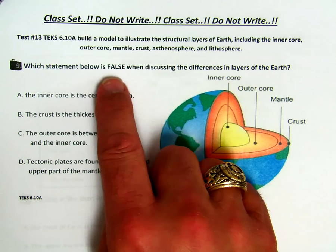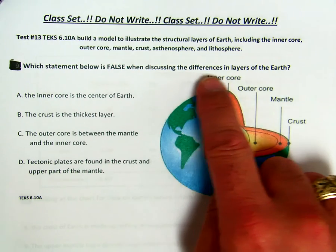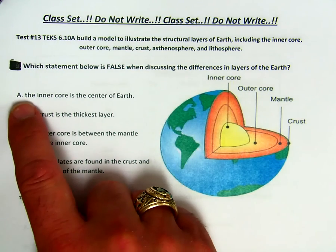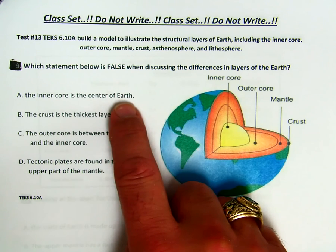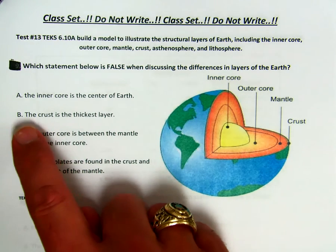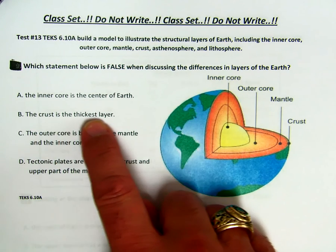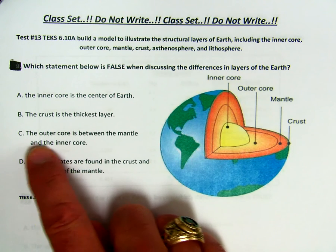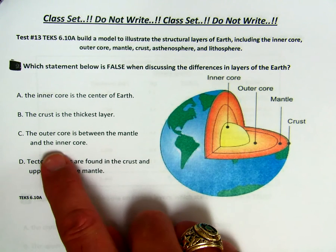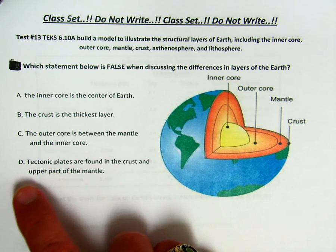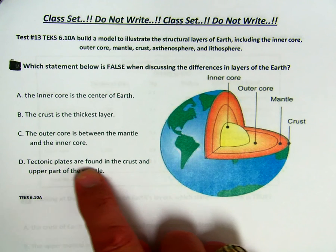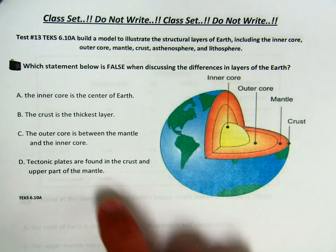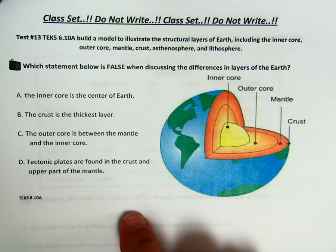Which statement below is false when discussing the differences in the layers of the Earth? Is it A, the inner core is the center of the Earth? B, the crust is the thickest layer? C, the outer core is between the mantle and the inner core? Or D, tectonic plates are found in the crust and upper part of the mantle? Which of those statements is false?